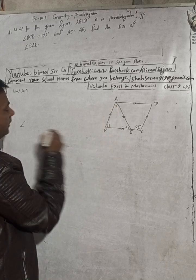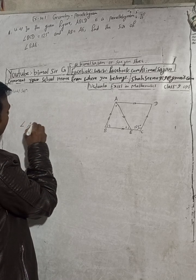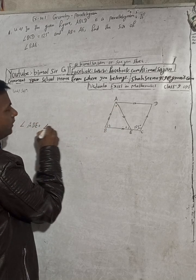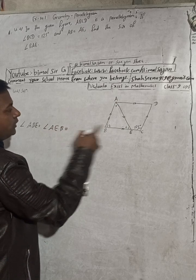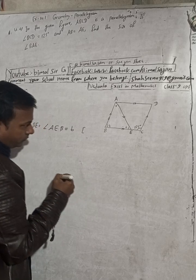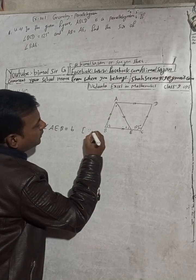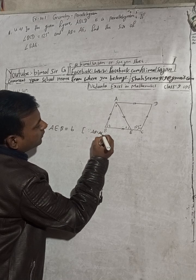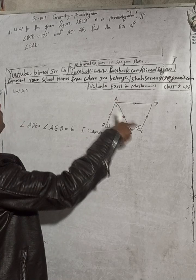Angle ABE is equal to angle AEB. Angle ABE equals angle AEB, and we call this B. The reason is that AB is equal to AE — this is given. Because AB equals AE, the triangle is isosceles, so these two base angles are equal.